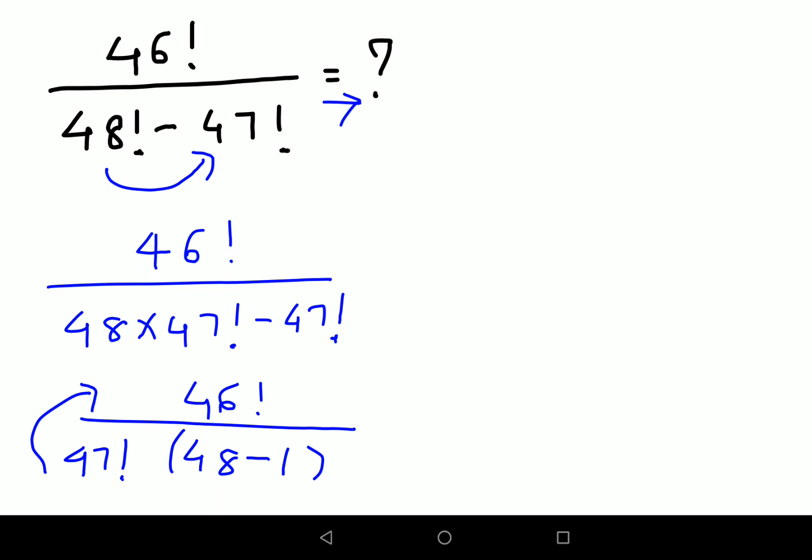Now if you see, I can write 47 factorial also in terms of 46 factorial. So which will be 46 factorial remaining as it is. This will now be 47 into 46 factorial. Now this bracket is 48 minus 1 which comes out to be 47.